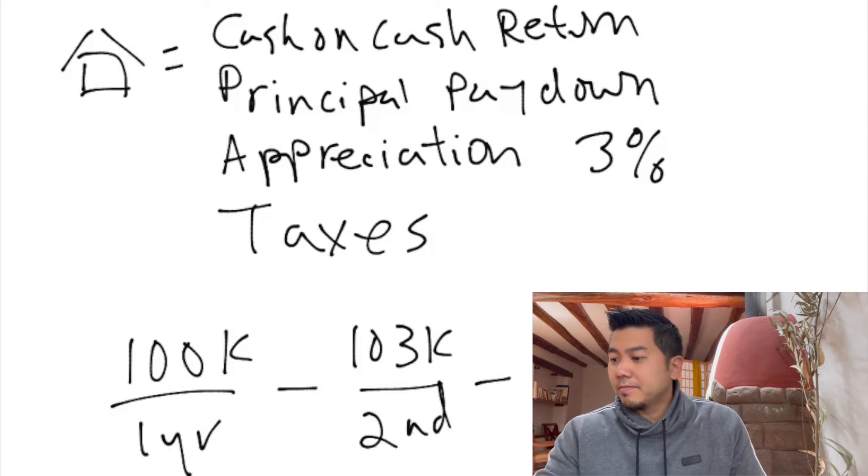The third step is understanding the compound effect. How does the compound effect work? Einstein said that compound interest — the compound effect — is the most powerful force that we know. Over a long period of time, little things turn into something really big. That applies to our habits and applies to our finances. It applies everywhere in our life.